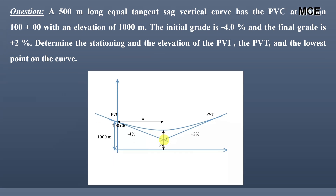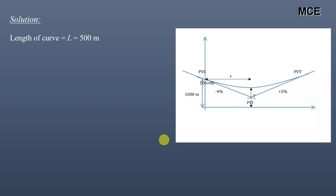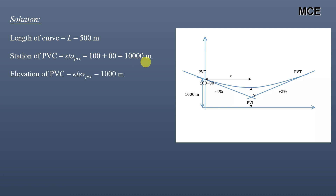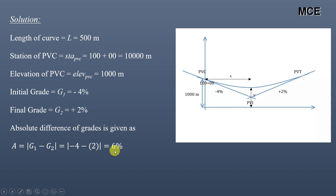Let us start the solution. First, we will list what is given: length of curve is 500 meters; station of PVC is 100+00 — remember that one station equals 100 meters, so 100 stations equals 10,000 meters; elevation of PVC is 1000 meters; initial grade g1 is minus 4%, final grade g2 is plus 2%. The absolute difference of grades is |g1 − g2| = |−4 − (+2)| = 6%.